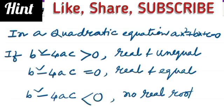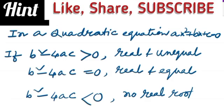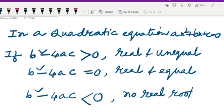Roots are real and equal if b square minus 4ac equals 0, and no real root is there if b square minus 4ac is less than 0.